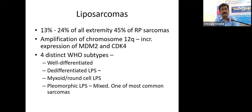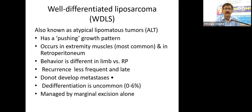Liposarcomas occur in the retroperitoneum in about 45 percent of all retroperitoneal sarcomas; they may also occur in the extremities. There is amplification of chromosome 12q with increased expression of MDM2 and CDK4. WHO has described four distinct types: well-differentiated, dedifferentiated, round cell, and pleomorphic liposarcoma.